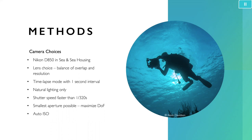We rely on the camera's intervalometer to take a photo every second, and we only use natural lighting because the program has a hard time stitching photos together if you're using your own light source and shadows are changing. We try to use a shutter speed faster than one three-hundredth of a second to prevent motion blur. To maximize depth of field — how much is in focus — we try to use the smallest aperture possible given available light. We typically set the ISO to auto, because the camera is able to produce relatively grain-free photographs even at high sensitivities.